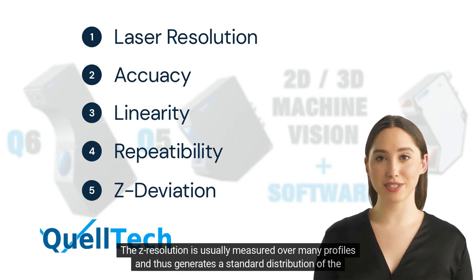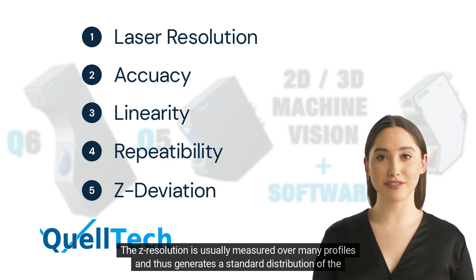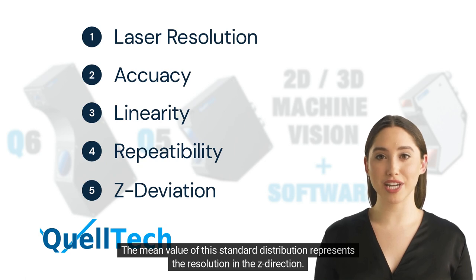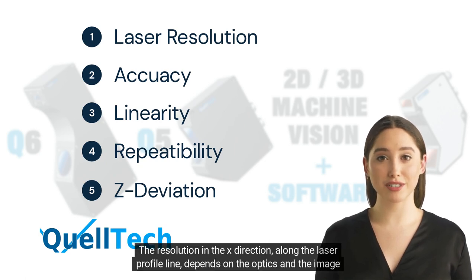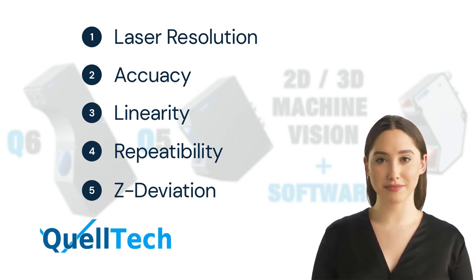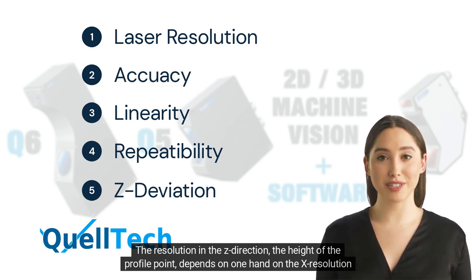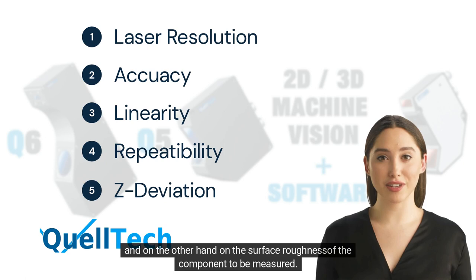The z-resolution is usually measured over many profiles and thus generates a standard distribution of the individual profiles. The mean value of the standard distribution represents the resolution in the z-direction. The resolution in the x-direction, along the laser profile line, depends on the optics and the image chip. The resolution in the z-direction, the height of the profile point, depends on the x-resolution and on the surface roughness of the component to be measured.